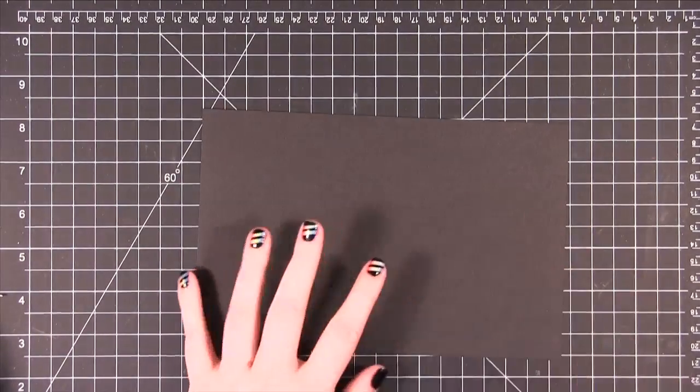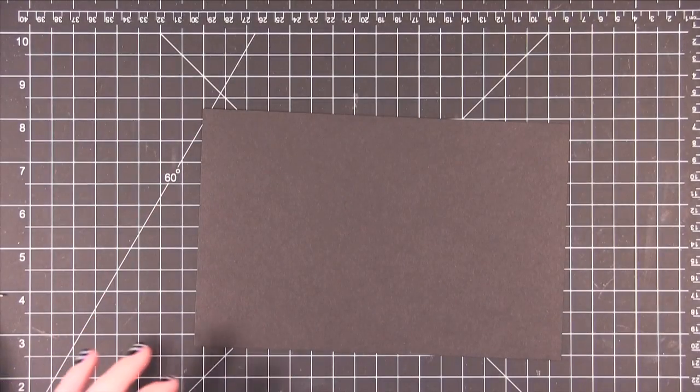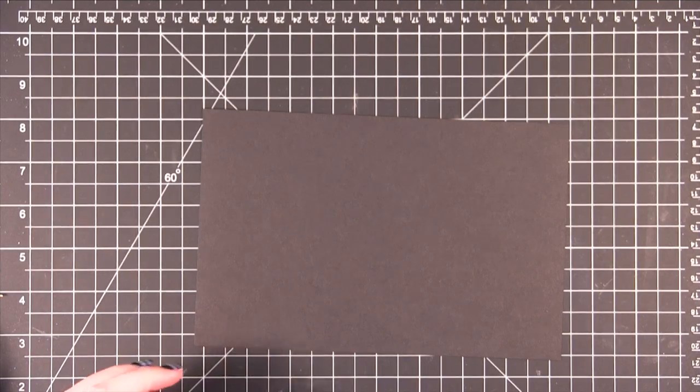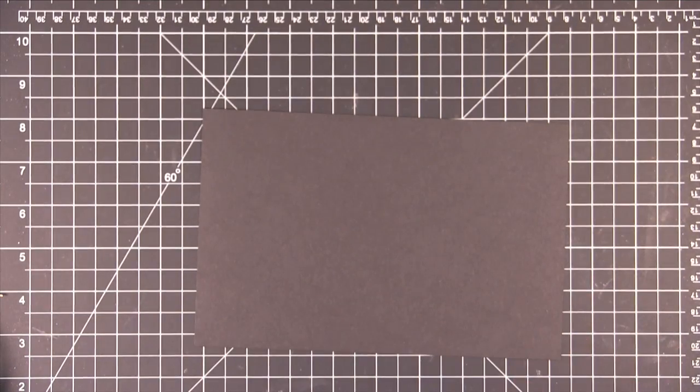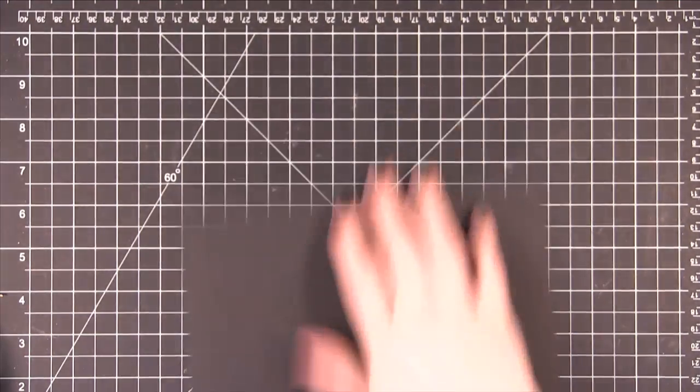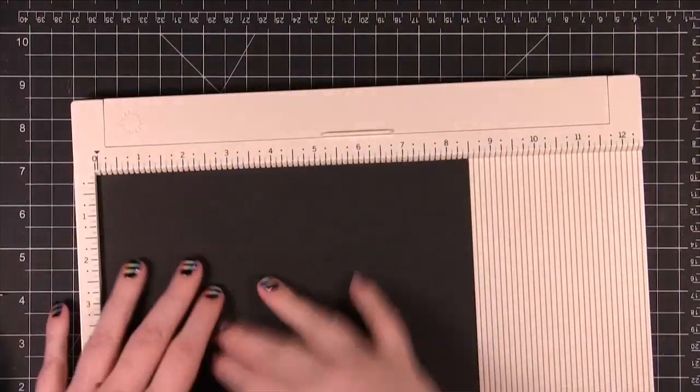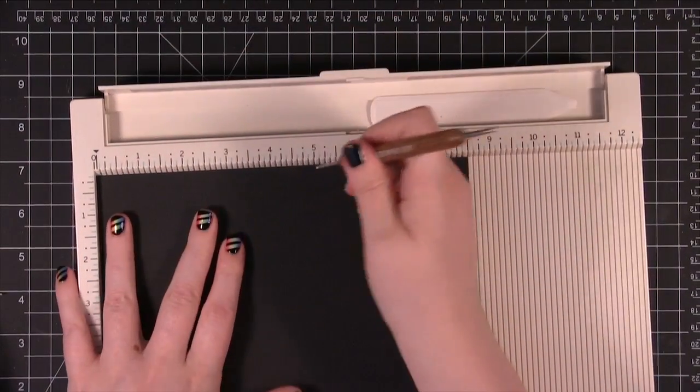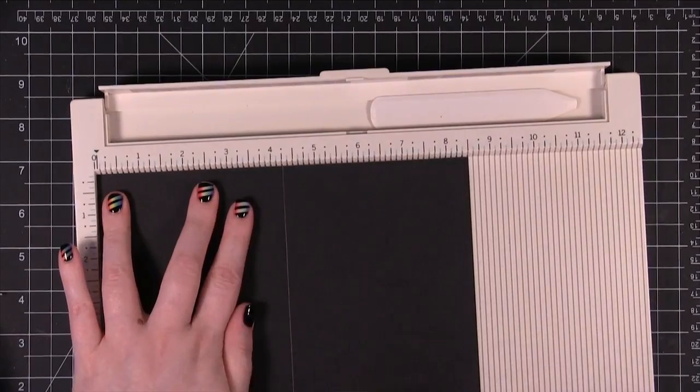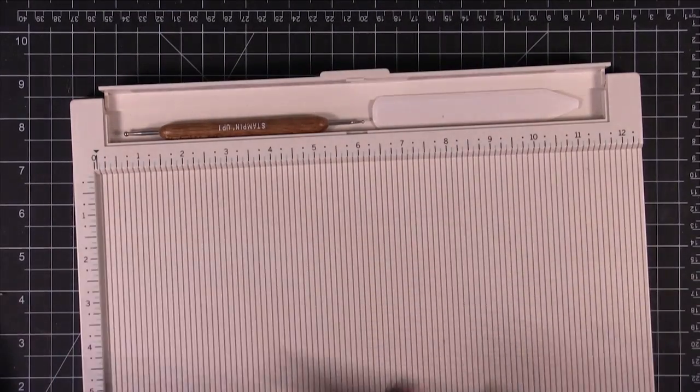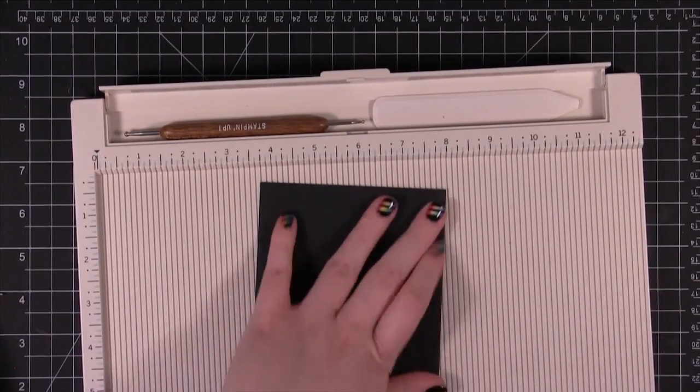Anyway, so I'm starting out with some black card stock here and this is some basic black from Stampin' Up! I'm just going to use a scoring board to score and fold that at four and a quarter to make the card front.